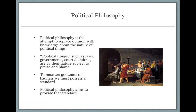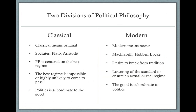We're saying that this law is unjust because of whatever — we're appealing to a standard when we do that. So political philosophy tries to provide that standard for us: the standard by which we can evaluate and ultimately judge political phenomena, whether it's a government, a regime, a court decision, a law, a political actor, etc. Within political philosophy, we have two broad divisions. On the one hand, we can refer to classical political philosophy, and on the other we can refer to modern political philosophy. There's a big difference between the two, and at least one study question for this week deals with some of these differences.